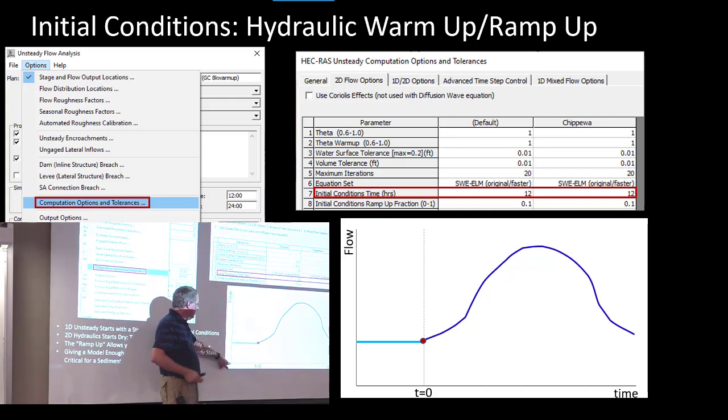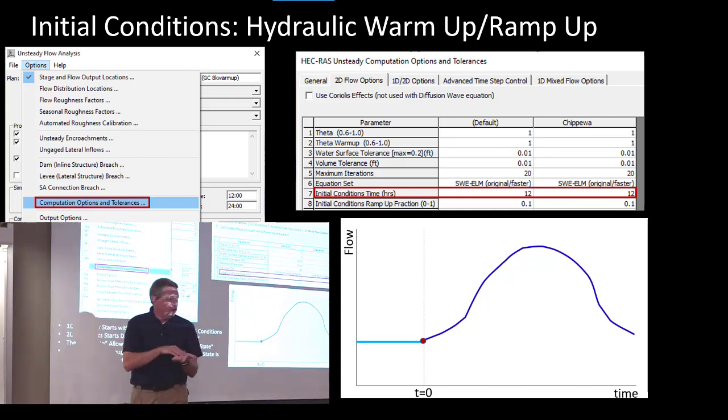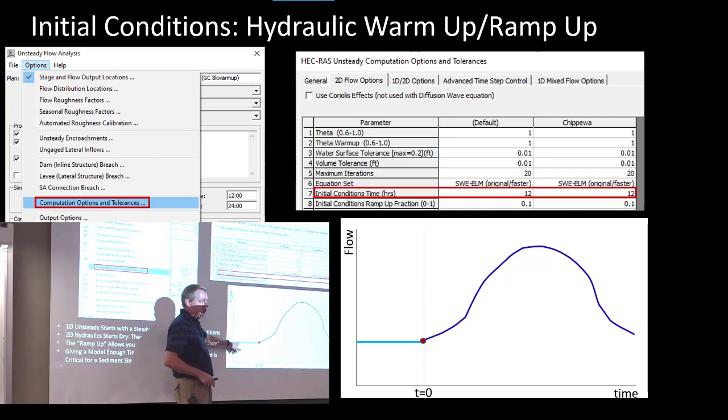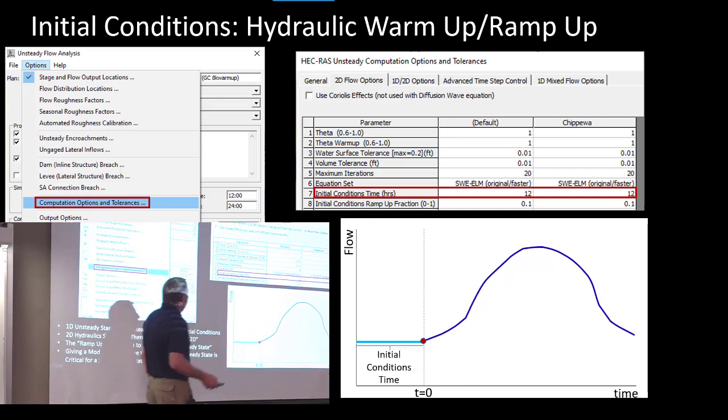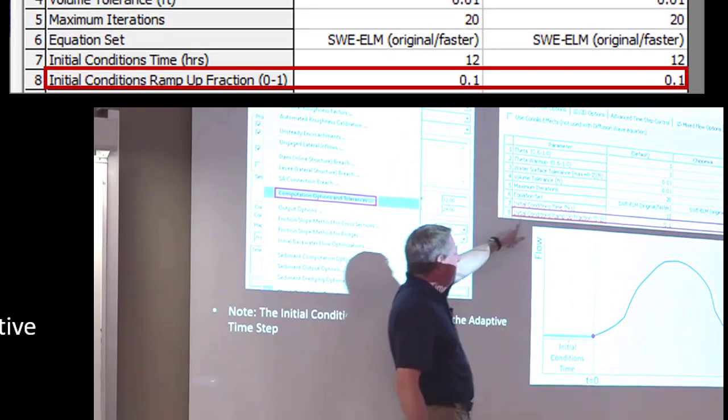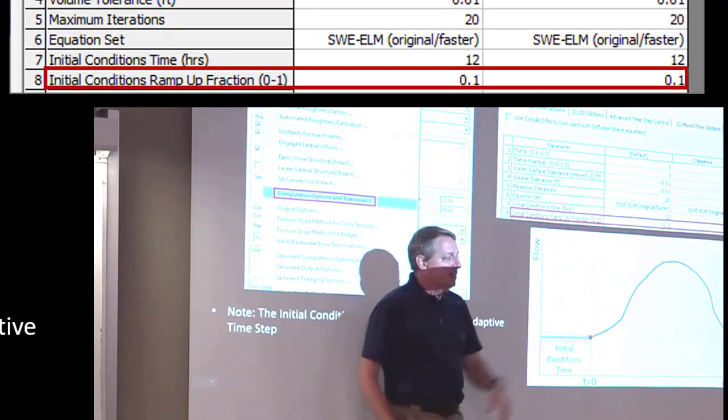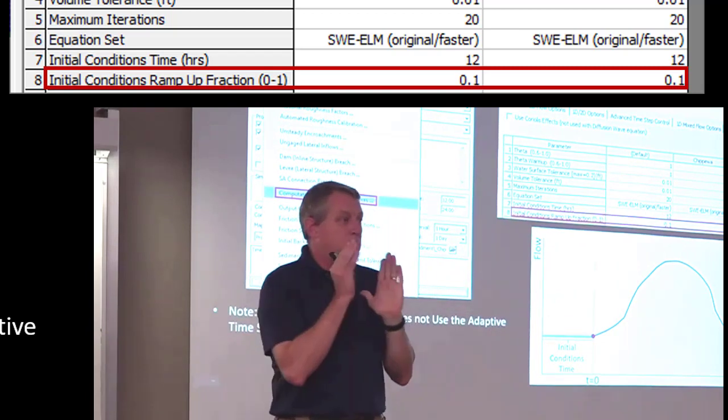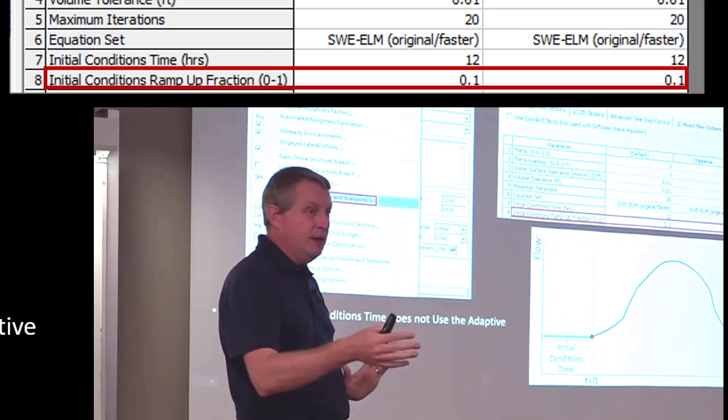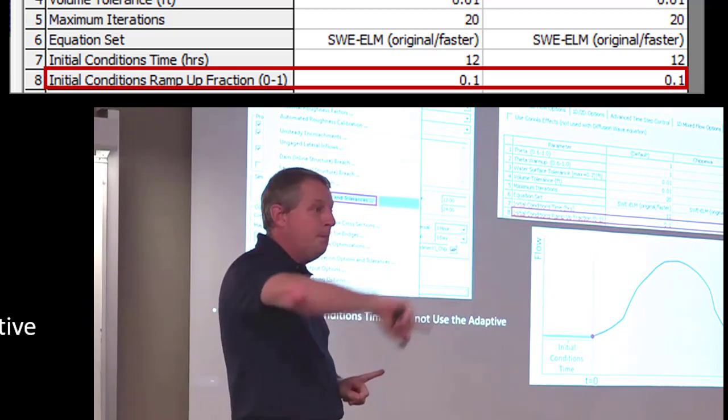Well, it would be nice to ramp that up, to start with a low flow and kind of edge towards this actual initial conditions flow. Well, that is what the ramp-up fraction is. And so the ramp-up fraction says, we're going to take some percentage or fraction of your initial conditions time, and we're going to use that to ramp up.